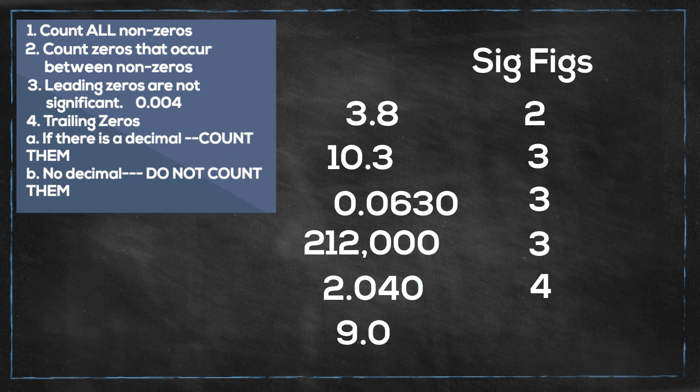And finally, this last one is 9.0. If you do not get tripped up by this one, it would be easy to just say 1, but you have a decimal and a trailing zero, so you would count it. So that would be 2.